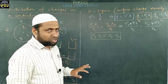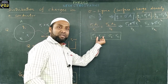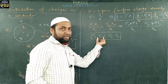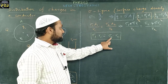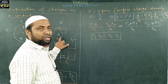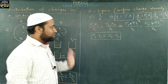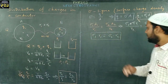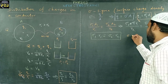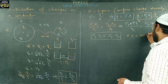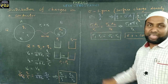This clearly shows that the product of surface charge density and the radius of the conductor equals the surface charge density of the second conductor multiplied with its radius. In simple words, σ·R is a constant.